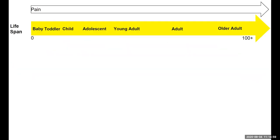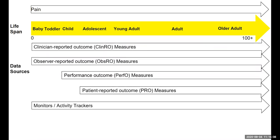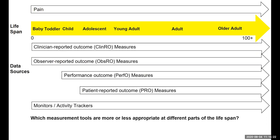Now let's look below the lifespan continuum at the types of clinical assessment tools. The different tools vary based on where the source of information is coming from — whether it's self-report like a patient-reported outcome, or from an observer or clinician. We can ask which clinical outcome assessment is more or less appropriate at different parts of the lifespan. If we think of the patient-reported outcome as the gold standard, unfortunately we can't administer a self-report to a baby or toddler. We typically start using patient-reported outcome measures when a child is maybe four or five years old, but feel more confident when that child is seven or eight or older.